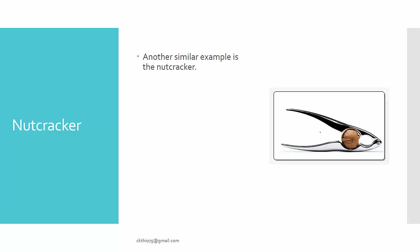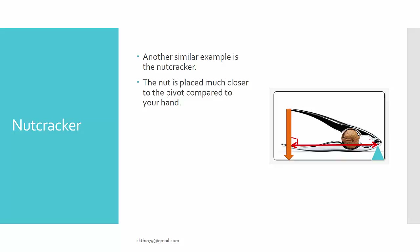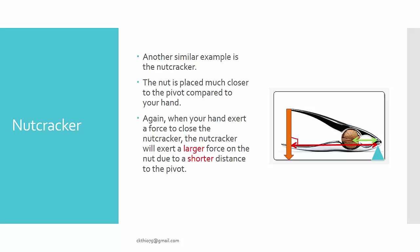Another situation is the nutcracker. If you want to crush a nut, you use a nutcracker. The pivot is at the hinge end, the force you apply is at the far end, and the perpendicular distance from force to pivot is 90 degrees. The nut is placed closer to the pivot compared to where your hand applies force. So when your hand exerts a certain force to close the nutcracker, the nutcracker exerts a much larger force on the nut due to the shorter distance to the pivot, helping us crack the nut with less effort.